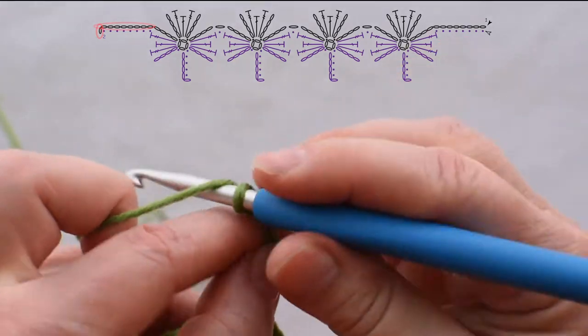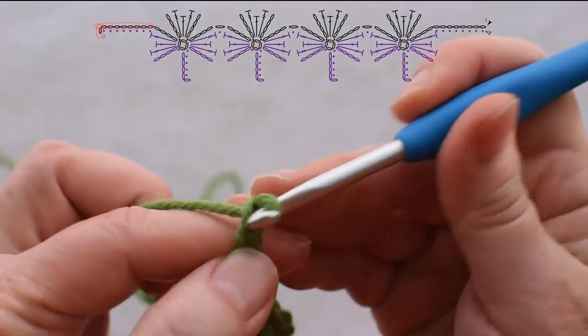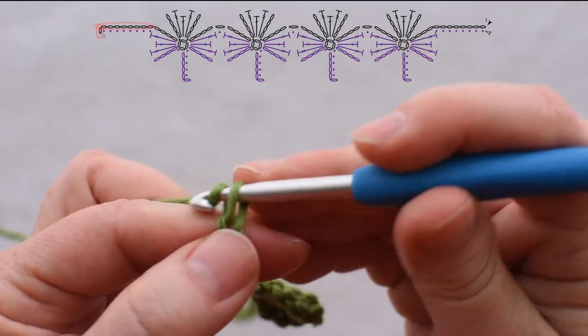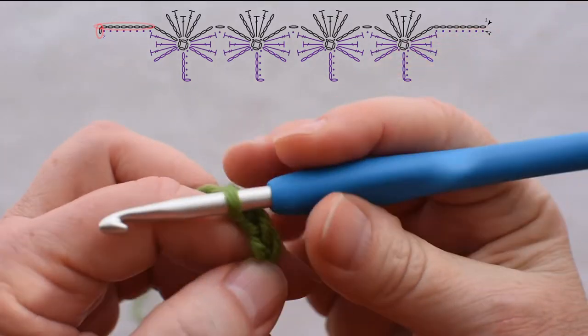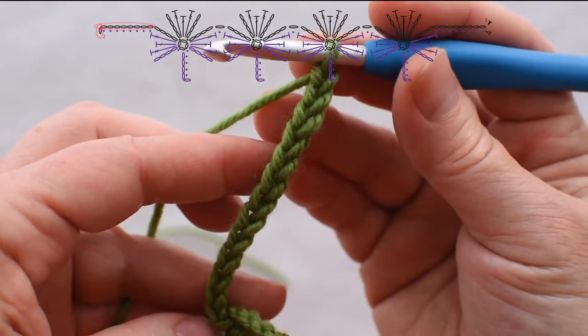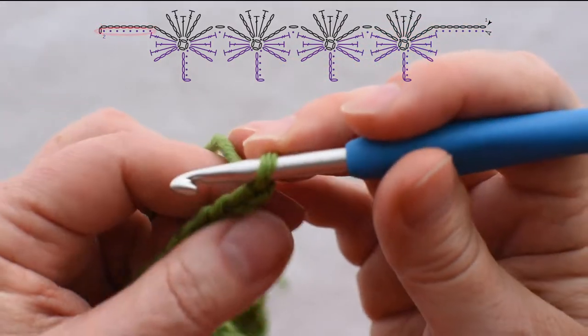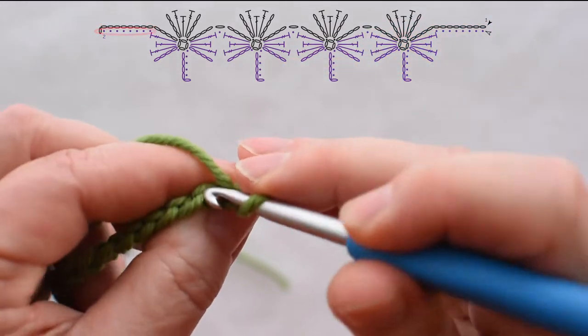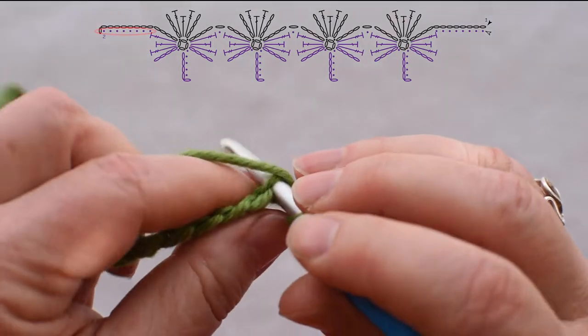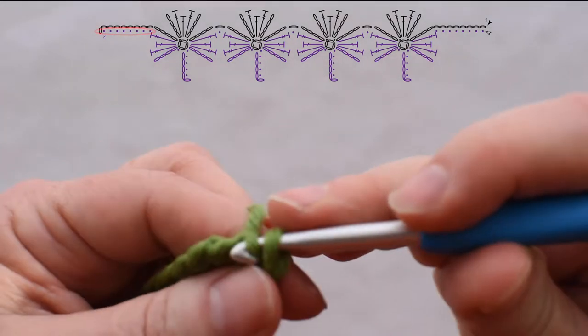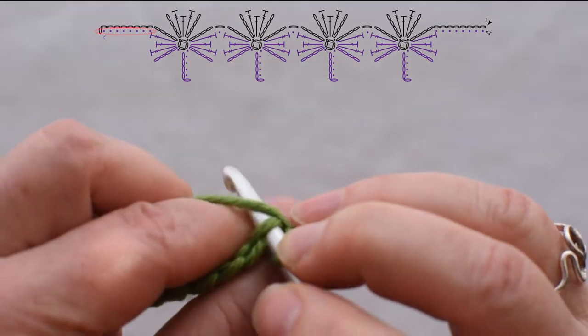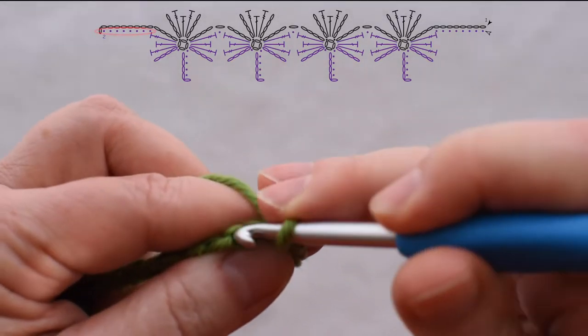Then I'll chain eight, which is the tail at the other end of my garland, and then slip stitch into the back bump of the second chain from the hook and in the next seven chains.